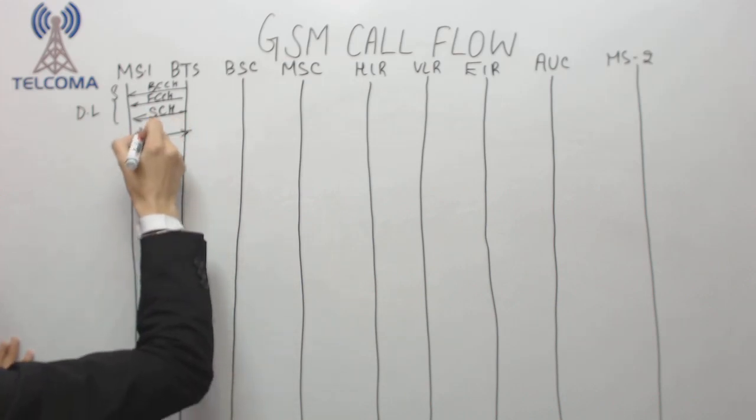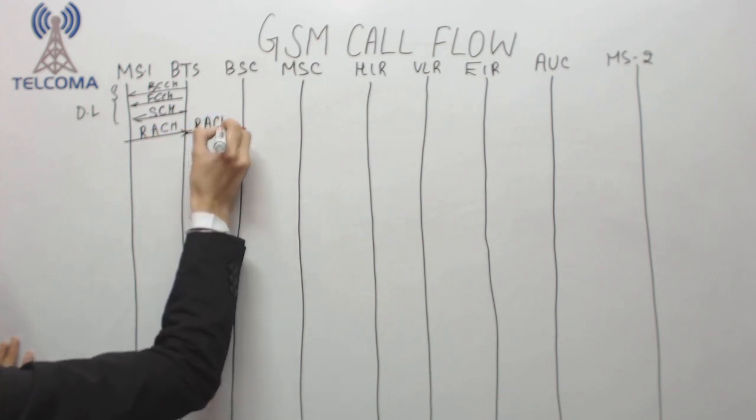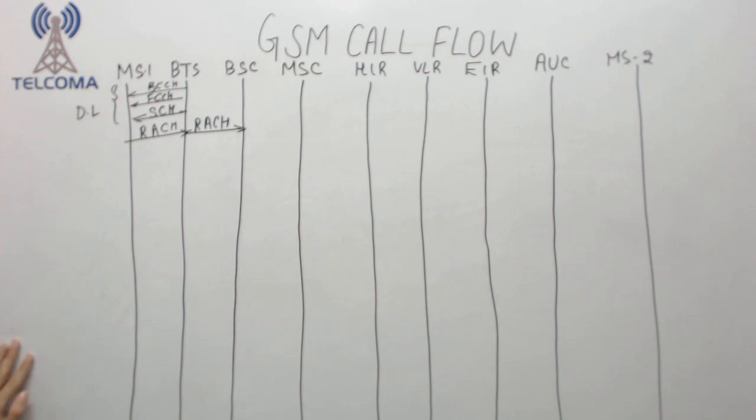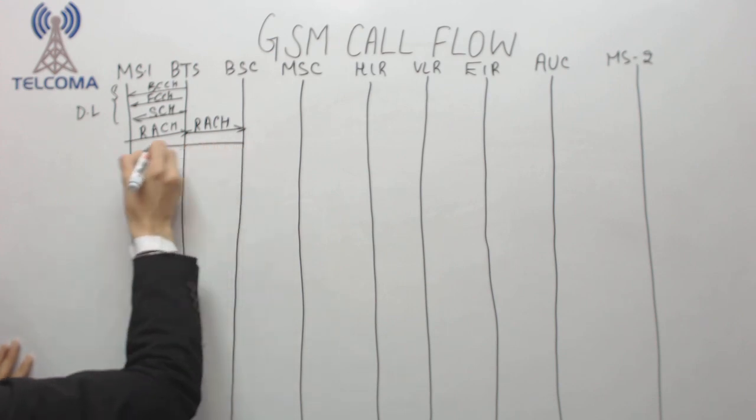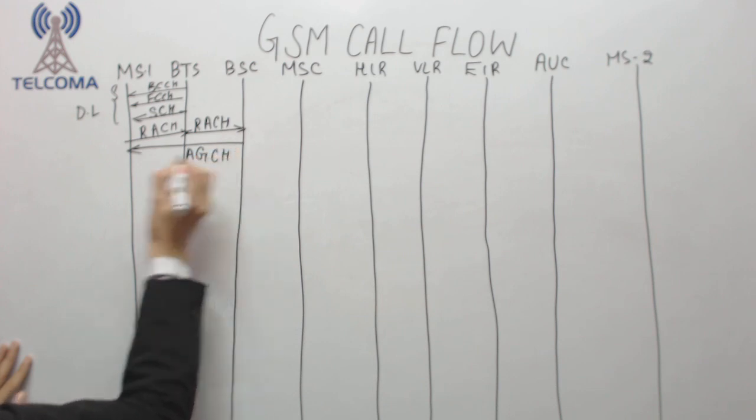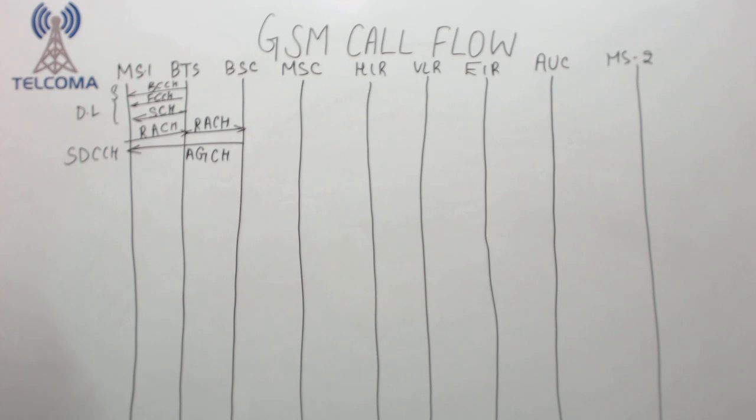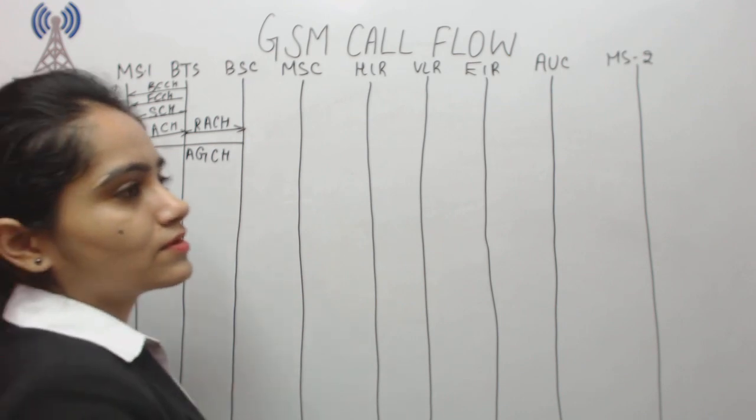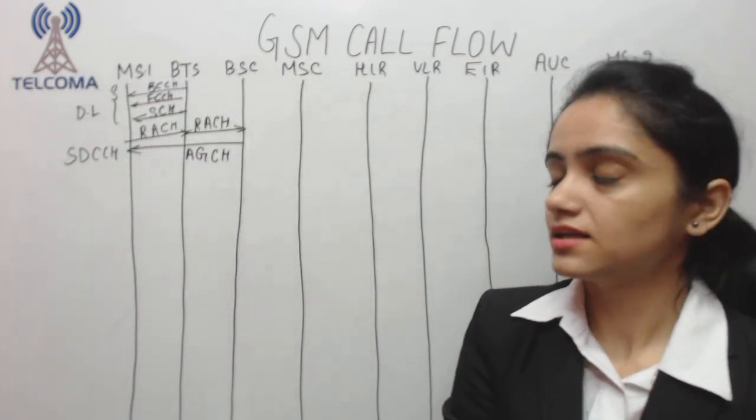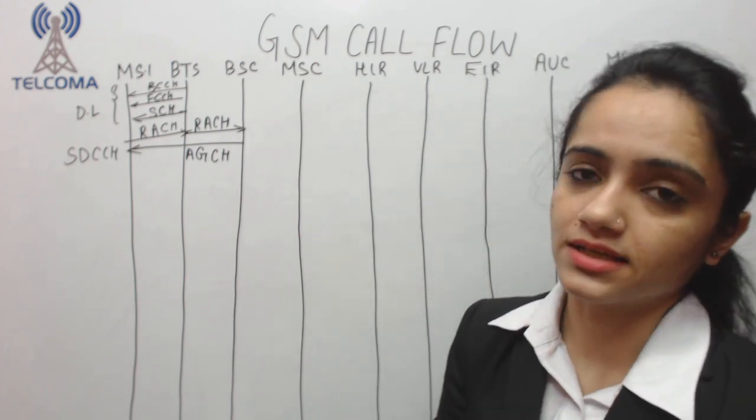This RAT request is forwarded to BSC that this mobile station wants to use the network. In response it will give an access grant channel, which means I have a dedicated channel with the name SDCCH. Now we are performing signaling. SDCCH is a main channel for signaling process.